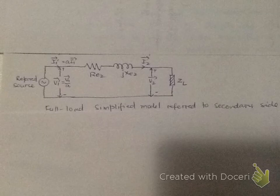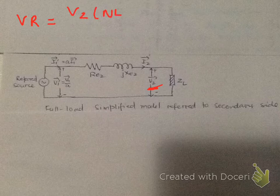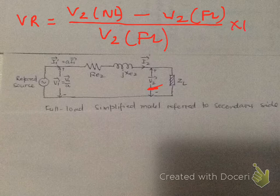This lecture is about voltage regulation, which talks about how constant the load voltage V2 stays at its value. Voltage regulation is measured as V2 at no load minus V2 at full load, expressed as a percent: (V2_noload - V2_fullload) / V2_fullload × 100%. This has to be a very small value for a system to run well.